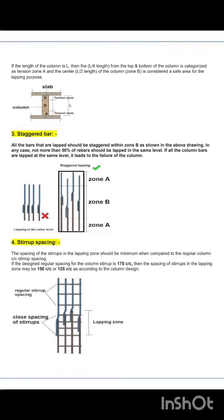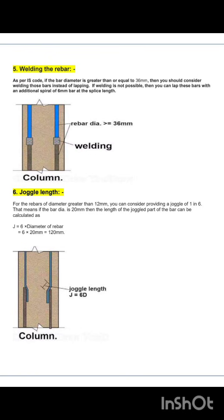Rule 5 is welding the rebar. Welding is also one of the methods of joining reinforcement. As per IS code, if the bar diameter is greater than or equal to 36mm, you should consider welding those bars instead of lapping. If welding is not possible, you can lap these bars with an additional spiral of 6mm bar at the lap length. You can see in the figure how welding of the rebar diameter is done.